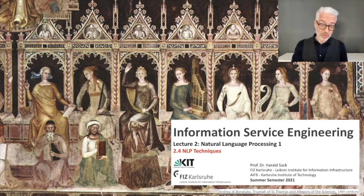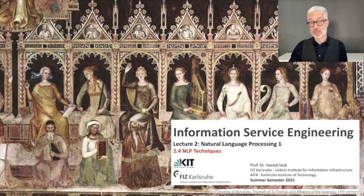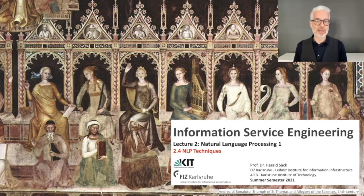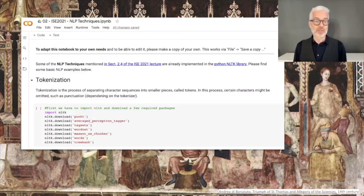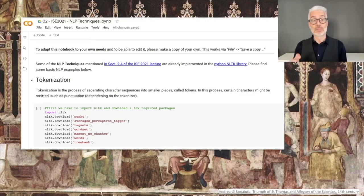If we want to link a specific word — a surface form — to an entity in a knowledge space that precisely explains what the word is, this is called entity linking or named entity resolution. We will also cover other techniques like semantic role labeling and coreference resolution. To make this practical rather than purely theoretical, we have prepared a collaborative Python-based notebook where you can try out tokenization and all the other techniques discussed.